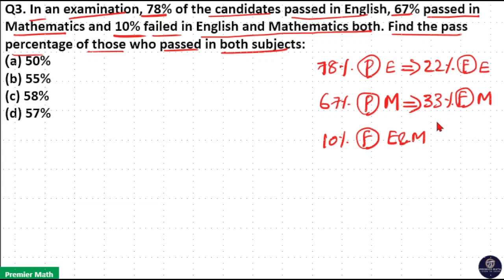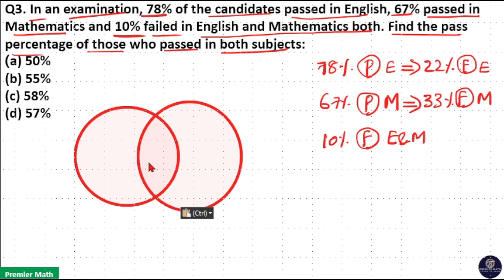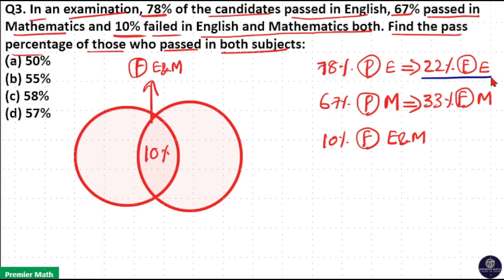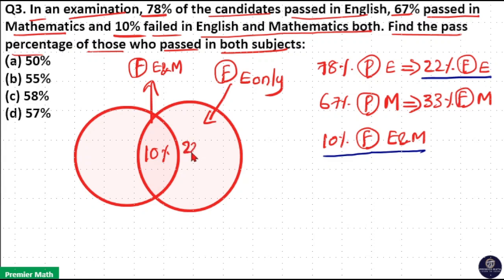Now let's draw the Venn diagram. The intersection represents the 10% of students who failed in both English and Maths. This 22% who failed in English includes the 10% who failed in both. So students who failed in English only will be 22 minus 10%, which equals 12%, because the 22% includes both those who failed English only and those who failed both subjects.